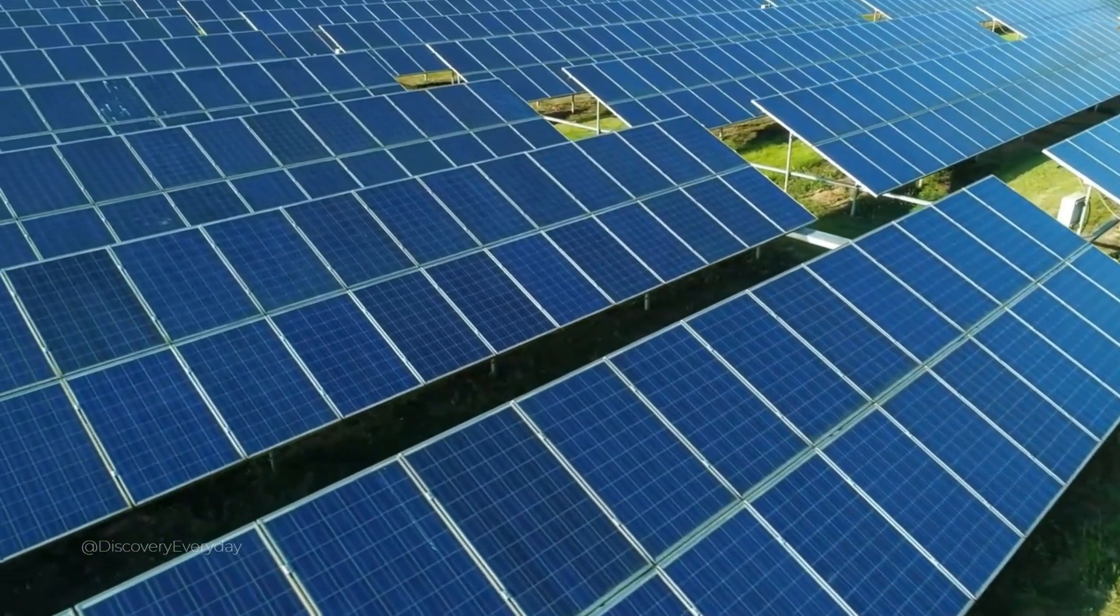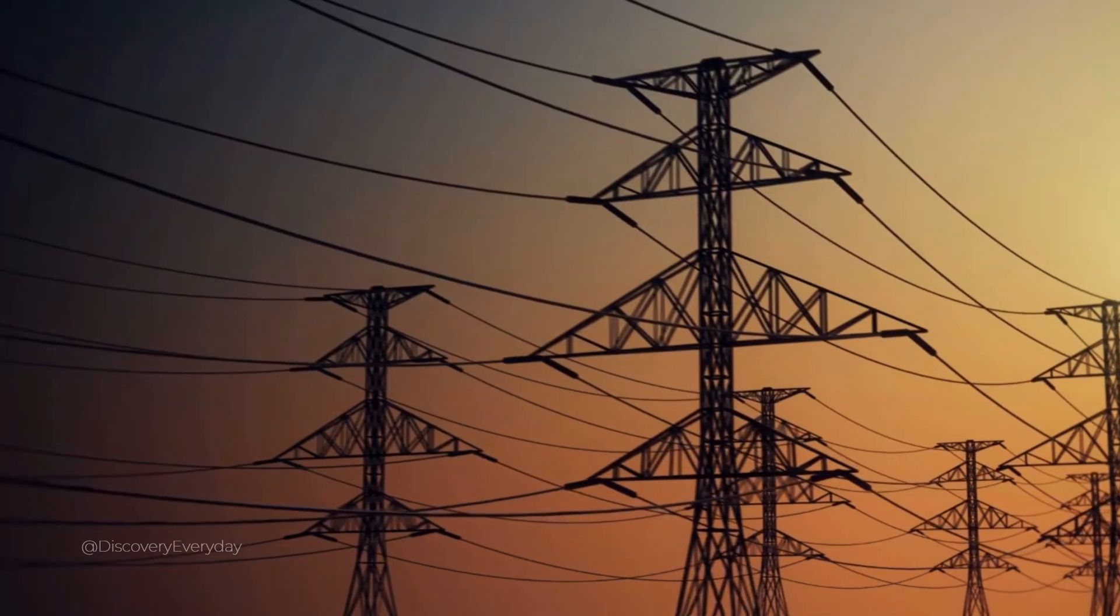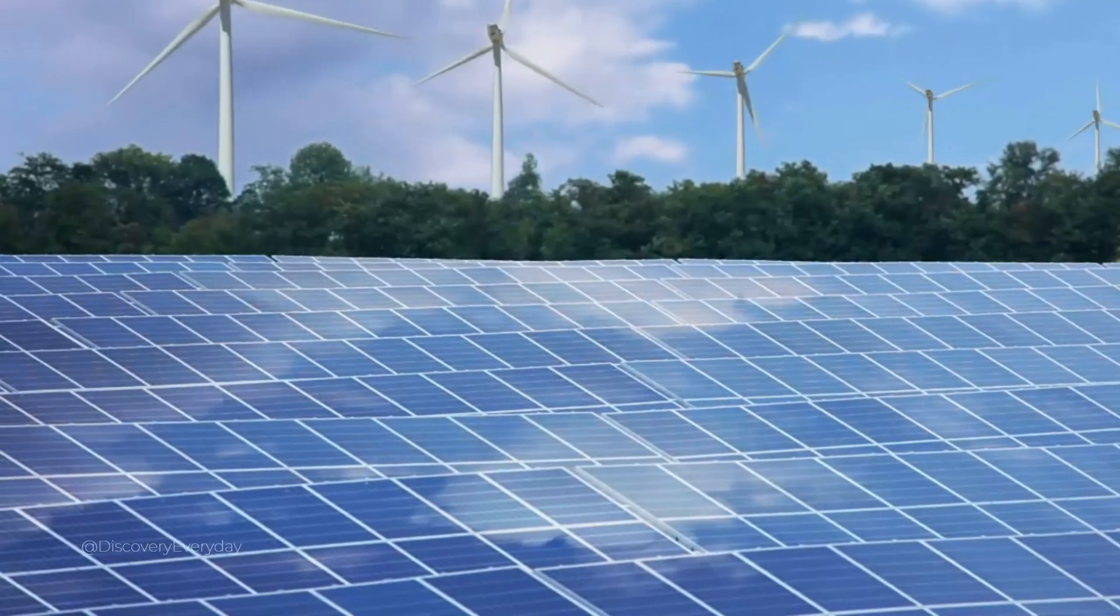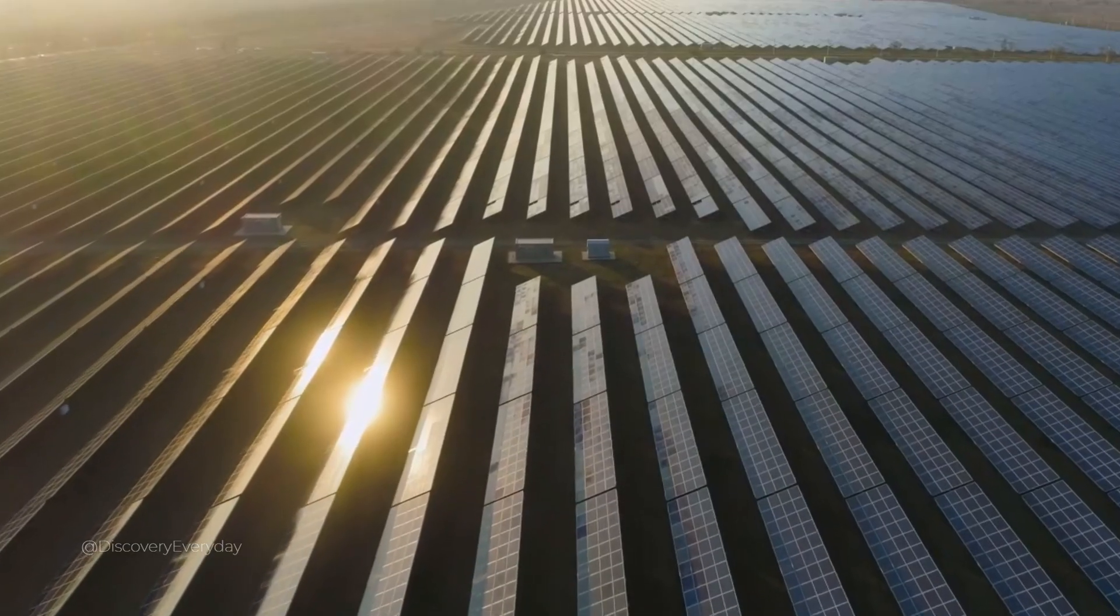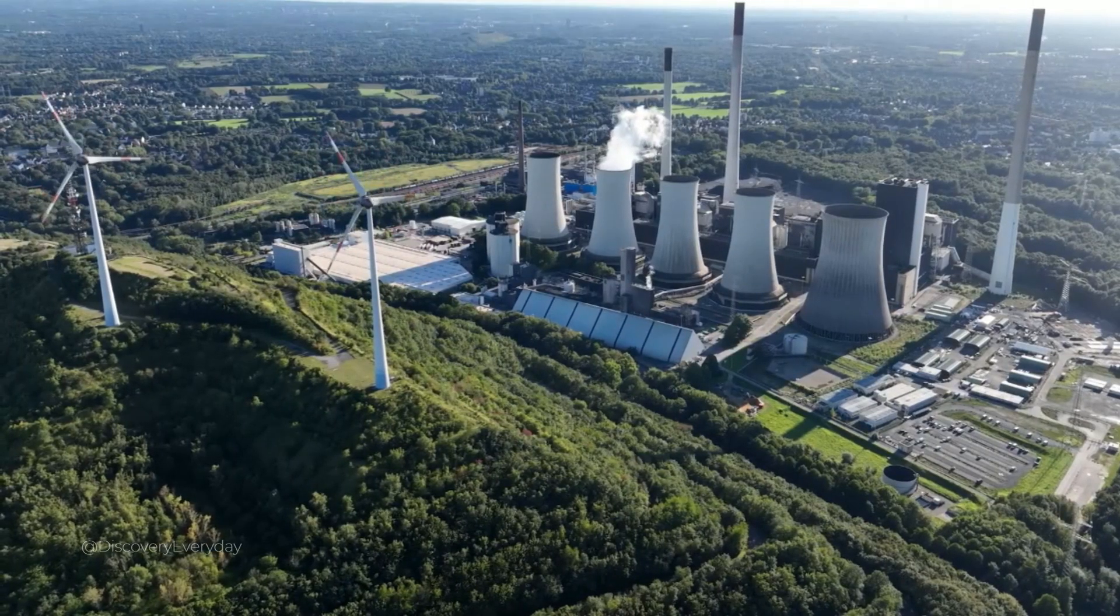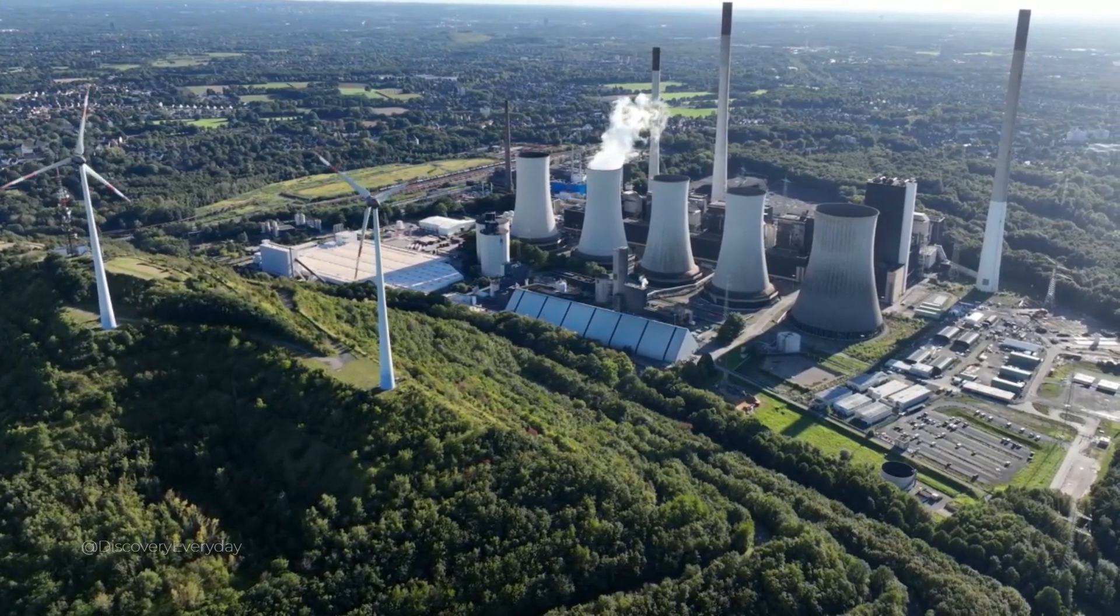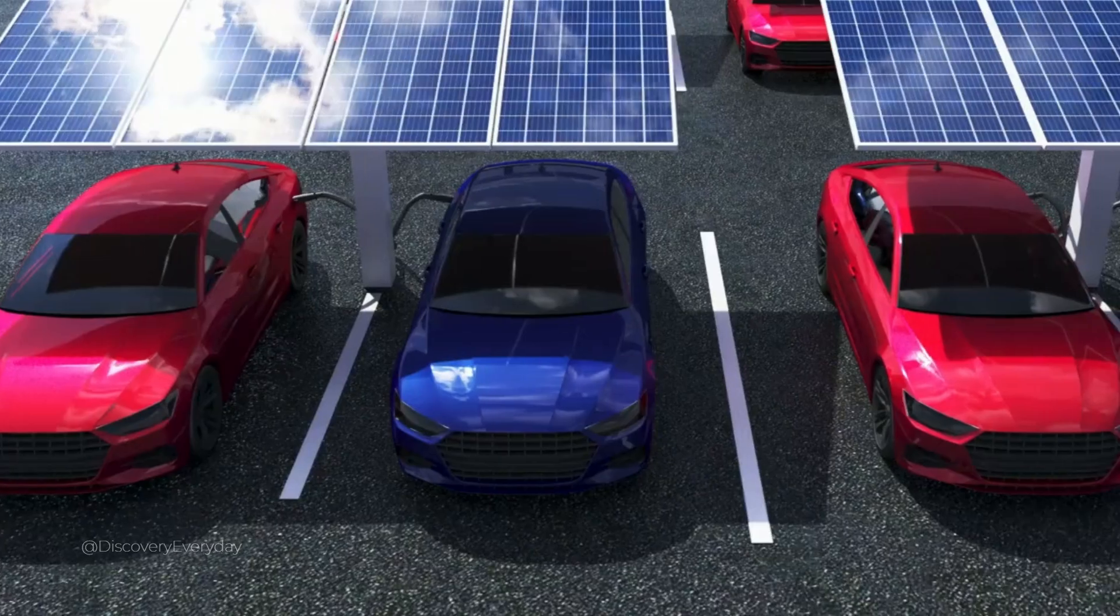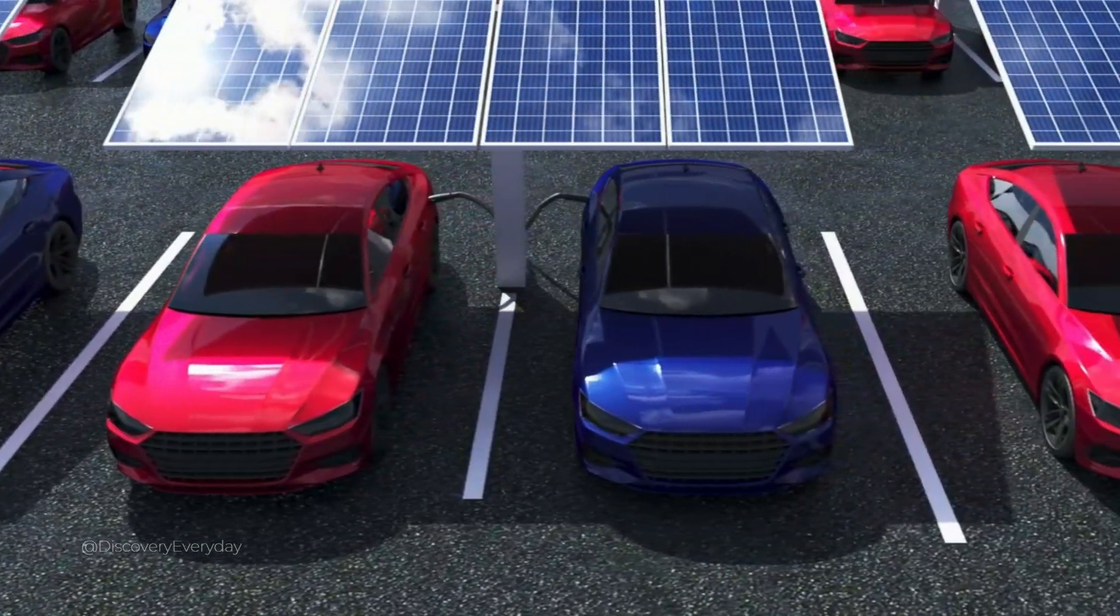Fact 6: More energy from the sun hits Earth every hour than the planet uses in a year. The use of solar energy has increased at a rate of 20% each year for the past 15 years. According to Yale Environment 360, the world added 30% more solar energy capacity in 2017, meaning that 98.9 gigawatts of solar energy was produced that year. Despite this seemingly large number, this amount of energy only accounts for 0.7% of the world's annual electricity usage.